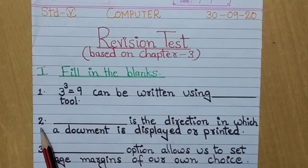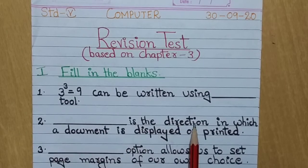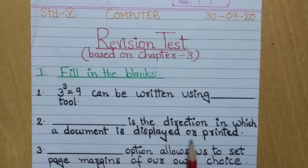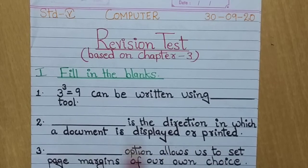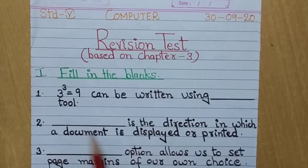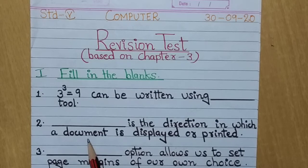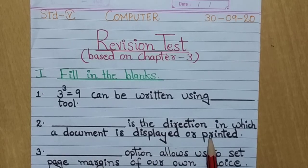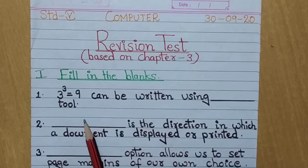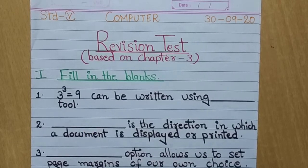Second number. Dash is the direction in which a document is displayed or printed. Aapko yaha pe pata na hai, aisa name yaha pe likhna hai aapko, jo ki batata hai direction jis mein ki document dikhaayi dayta hai ya phir print hota hai. So you will write the answer in this blank.